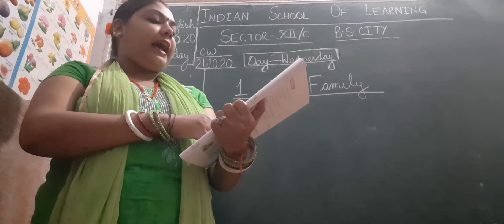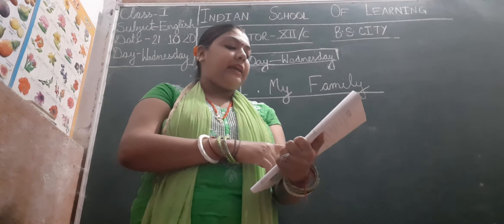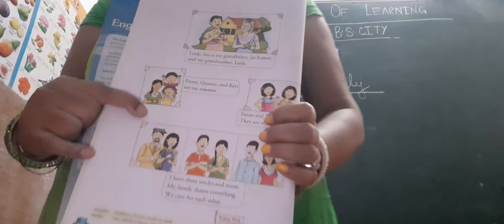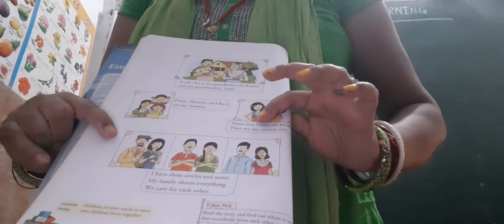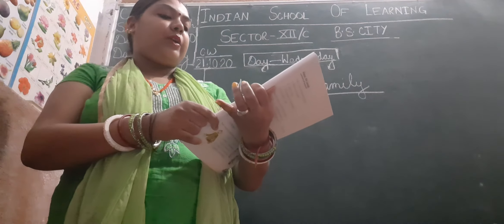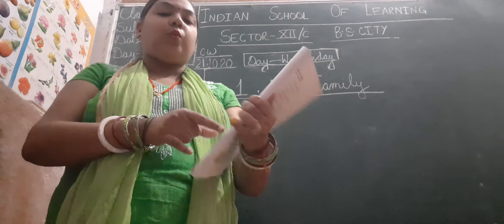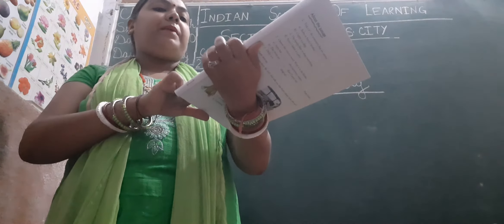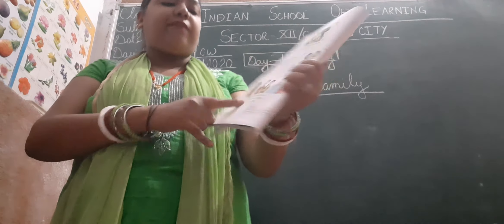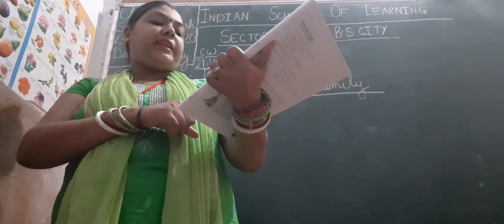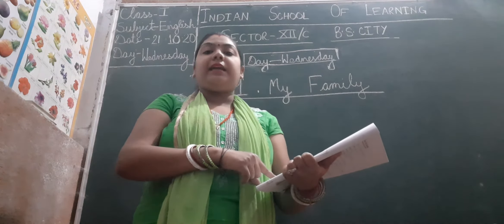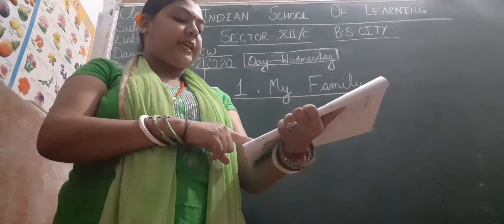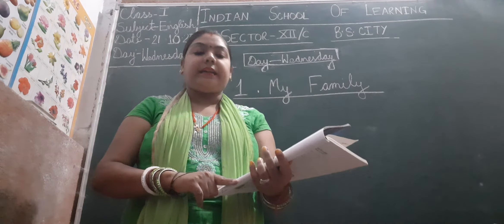Preeti, Queenie and Ravi are my cousins. Ye teeno mere bhai bahan hain — Preeti, Queenie and Ravi. Shushan and Tanya are twins. They are my cousins too. Shushan aur Tanya bhi mere cousins hain aur ye dono bhi meri bahan hain. I have three uncles. Mere teen uncle auntie hain. And my family shares everything; we care for each other. Hamare saare family ek doosre se har cheez share karte hain aur ek doosre ki chinta karte hain.